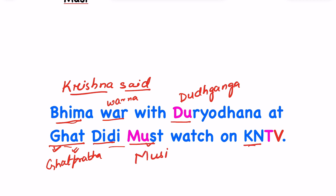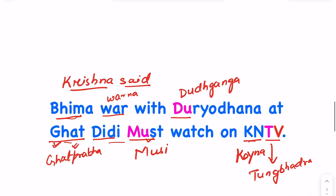K-N stands for Koyna. T-V: T stands for Tungabhadra, and V stands for Vedavati. So the full trick is: Krishna said, Bhima war with Duryodhana at Ghat. Didi must watch on KNTV.